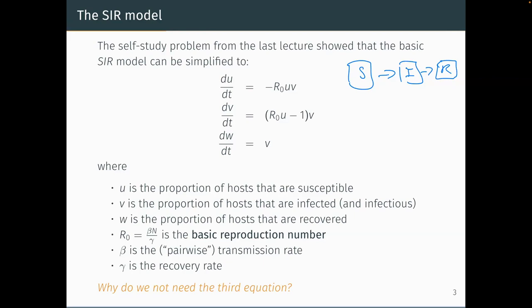If you double β and double γ, R₀ stays the same, and you get the same qualitative model. Part of that is because we've rescaled time according to the average infectious period. In the original SIR model, doubling both β and γ would speed up the epidemic — everything gets squashed in time — but because we scale time by the average infectious period, it has no effect on this model.